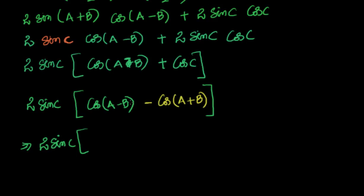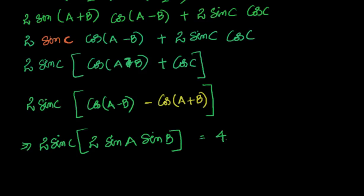Expanding: cos(a-b) minus cos(a+b) equals (cos a cos b plus sin a sin b) minus (cos a cos b minus sin a sin b). The cos a cos b terms cancel, leaving 2 sin a sin b. Therefore the full expression equals 2 sin c into 2 sin a sin b, which is 4 sin a sin b sin c.